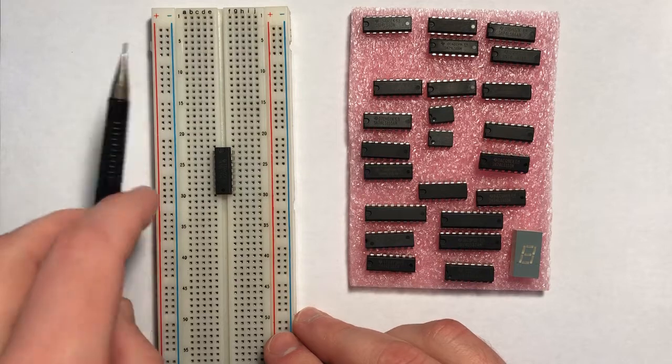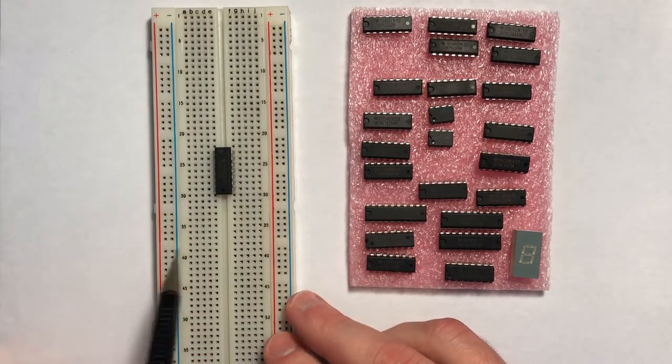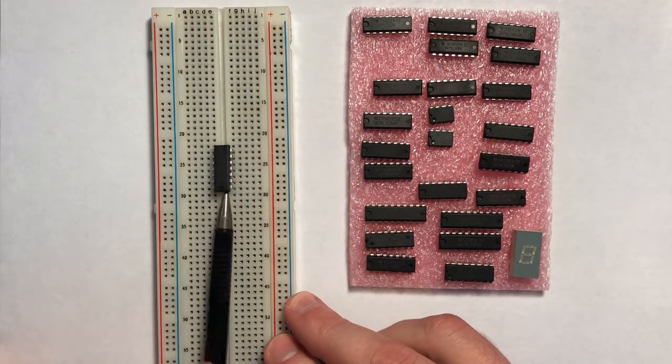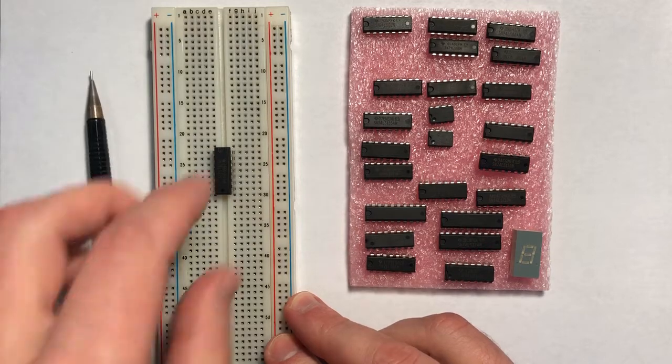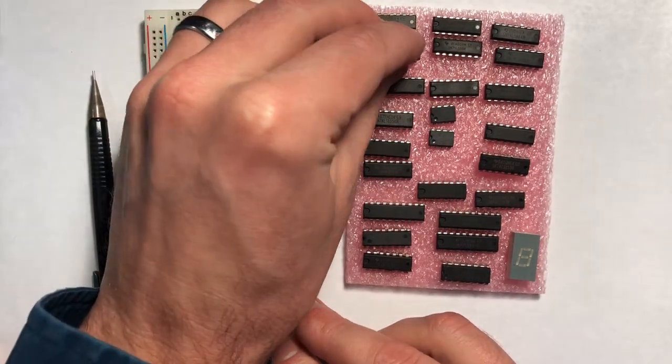When we're done with our IC, it's useful to have something like a pencil or something else that's small that we can use to pry the IC out. Sometimes it can be difficult to remove if you're just using your hand.